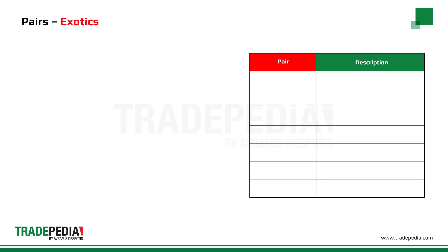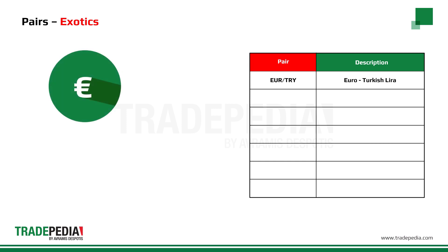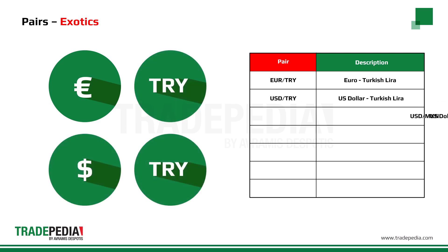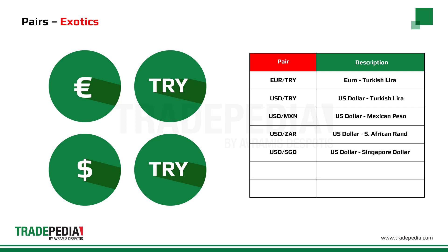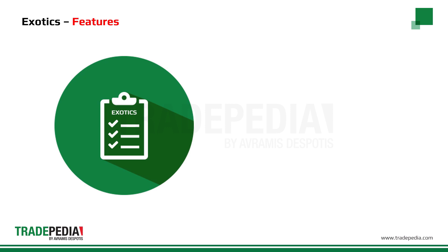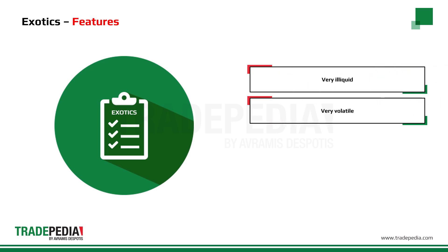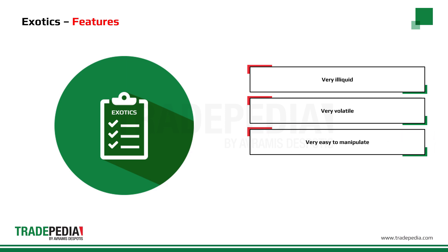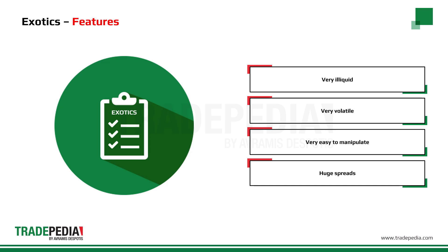Currency pairs with at least one currency being the currency of an emerging economy are called exotics. Some examples are euro against the Turkish lira, US dollar against the Turkish lira, US dollar against the Mexican peso, US dollar against the South African rand, US dollar against the Singapore dollar, US dollar against the Danish krone, and US dollar against the Hong Kong dollar. Exotic pairs are not traded as often as the majors or crosses, so the cost of trading them can be high. They are very illiquid, very volatile due to sensitivity to sudden political and financial developments, susceptible to manipulation due to very low volumes, and have very high transaction costs. Only very experienced Forex traders are advised to trade exotics.